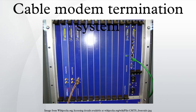In order to provide high-speed data services, a cable company will connect its headend to the internet via very high-capacity data links to a network service provider. On the subscriber side of the headend, the CMTS enables communication with subscribers' cable modems.